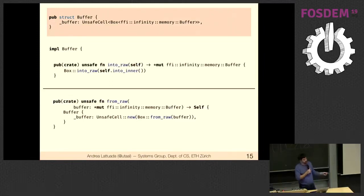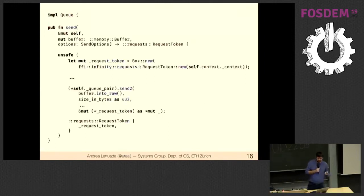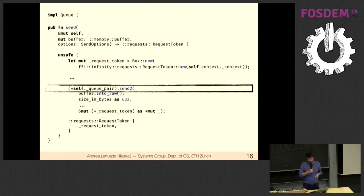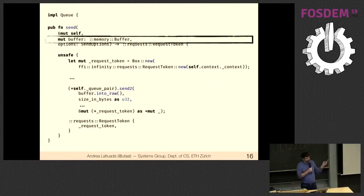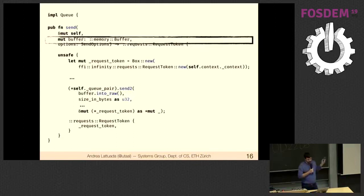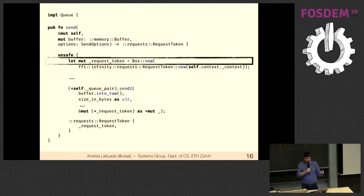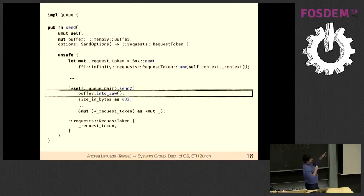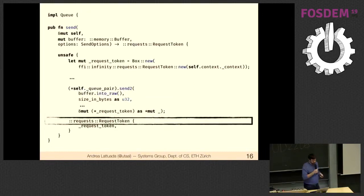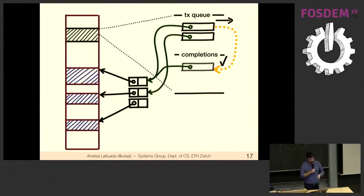Now we have a clear boundary: when Rust has control of the buffer versus when the hardware does. For a send operation, the QPair (queue pair) interface to the NIC has a send function that is not unsafe — it takes the buffer by value, relinquishing ownership. The return type doesn't contain the buffer anymore; instead we get a request token that lets us track the operation but doesn't allow accessing the buffer. Then we call into_raw so the buffer disappears into NIC nirvana.